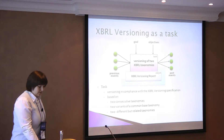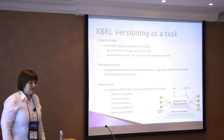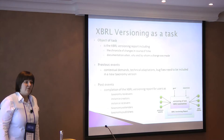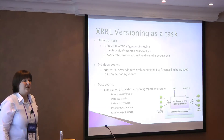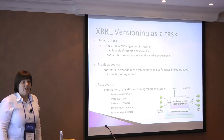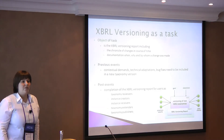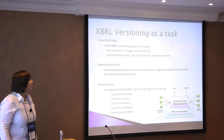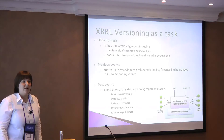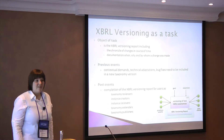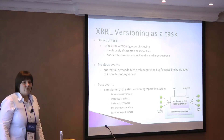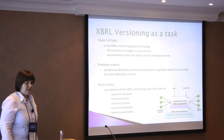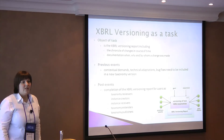The object of the task is the versioning report itself. It should present a chronicle of changes in the course of time and document why, by whom, and when the change was made. The previous events that lead us to versioning are normally contextual demands — for example, new accounting standards, new amendments on regulatory rules, technical adaptations like introducing a formula link base in our taxonomy, and bug fixes such as typos. The post event is a complete versioning report for our users, including taxonomy reviewers ensuring taxonomy quality.